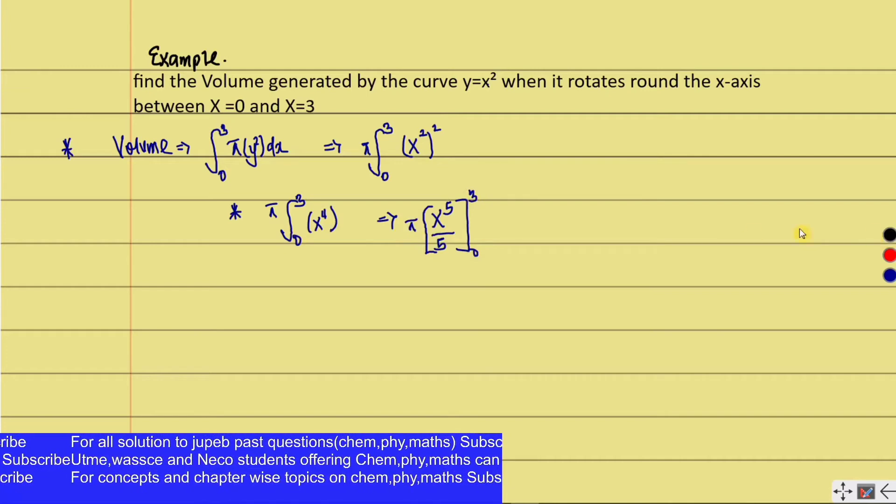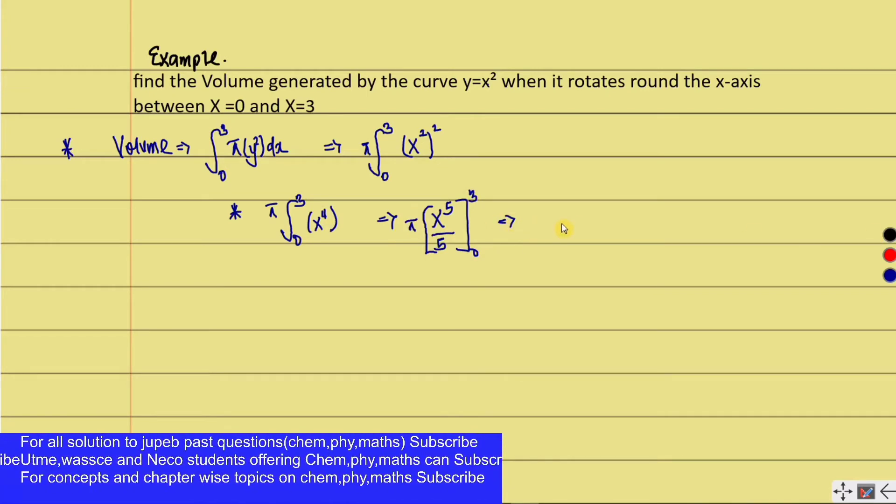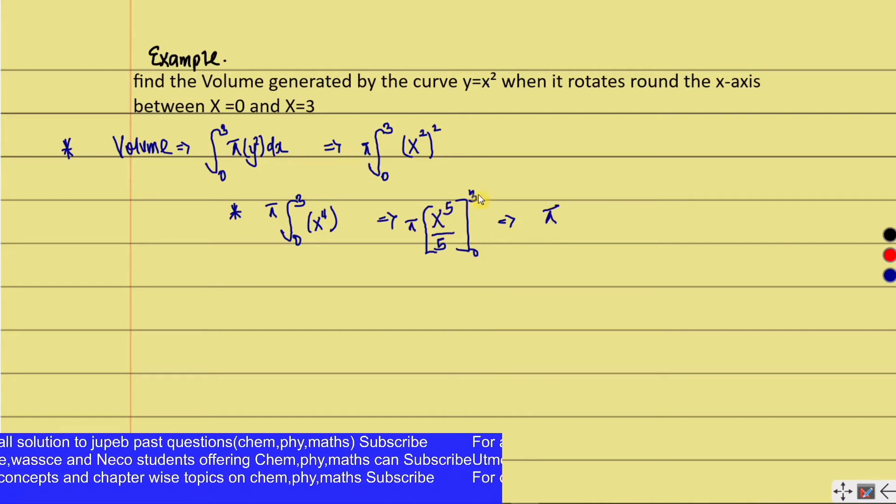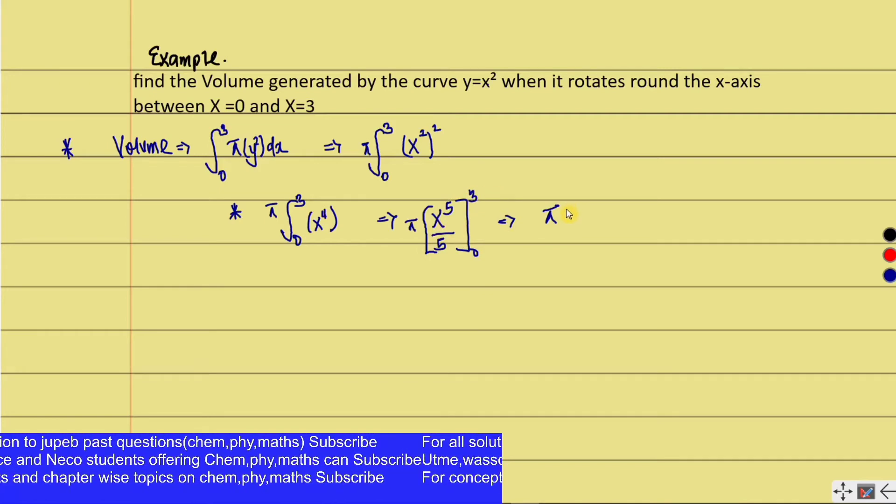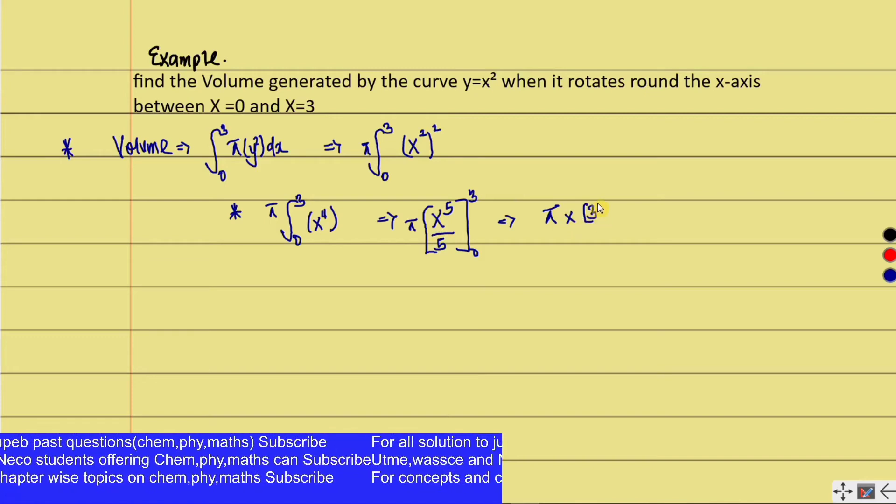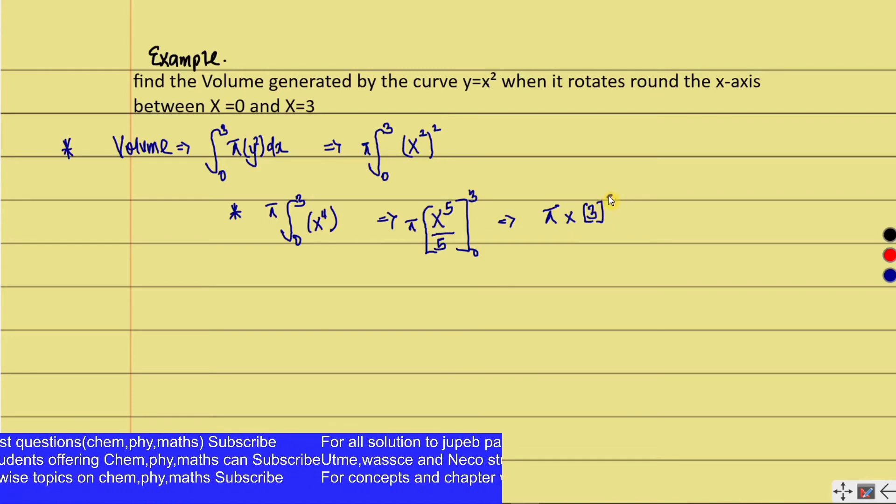π is a constant outside, taking the limit from 0 to 3. We substitute the values: π times 3 to the power of 5 (since zero will still be zero) divided by 5.